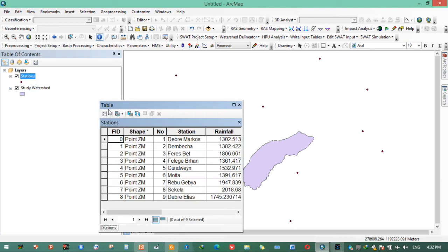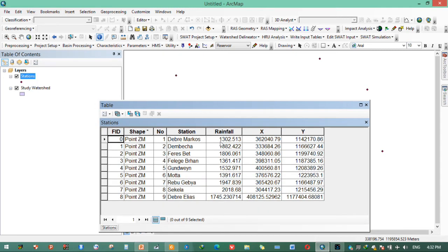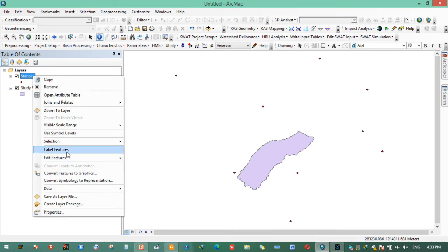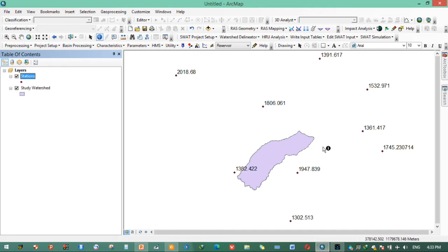Station data includes, I will show you by opening attribute table. We need to prepare stations in such a way. This is station names. This is mean annual rainfall. This is X and Y coordinate. We need to prepare this and we need to open an arc map. This is important. We can also develop features here. This is mean annual rainfall of nearby stations for this watershed.